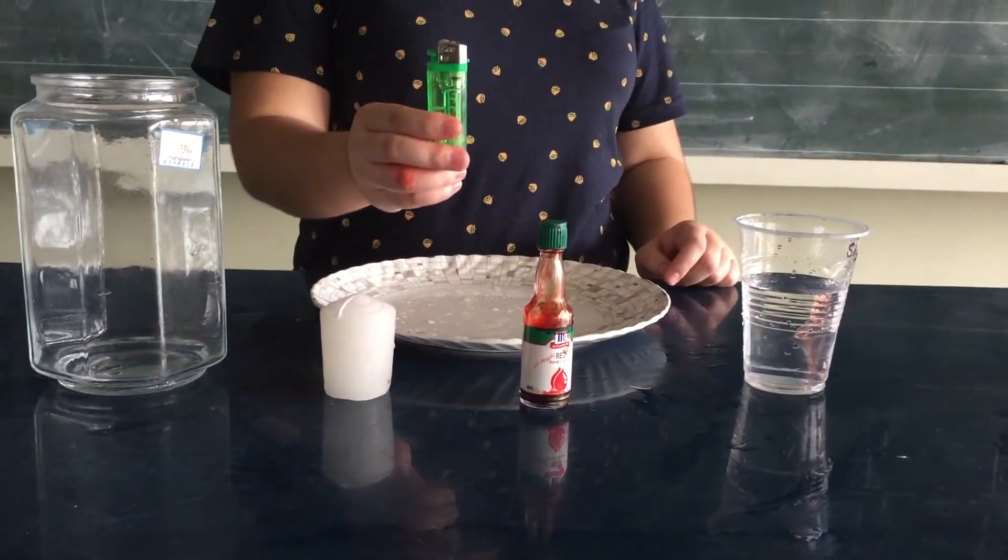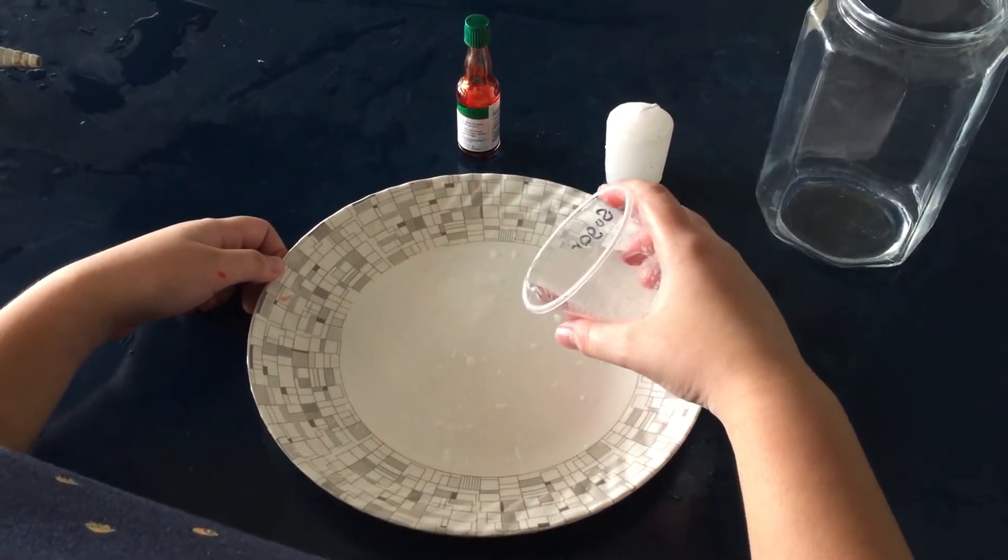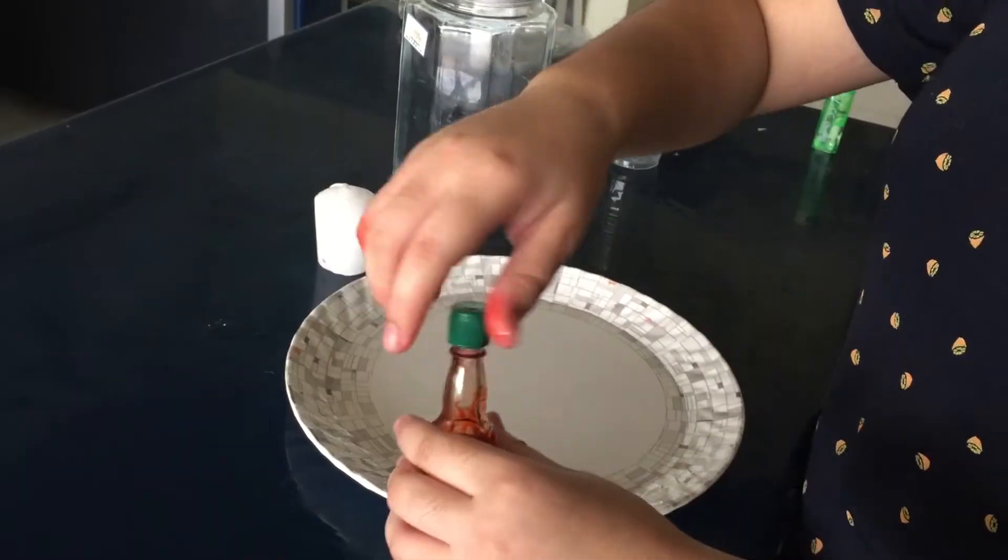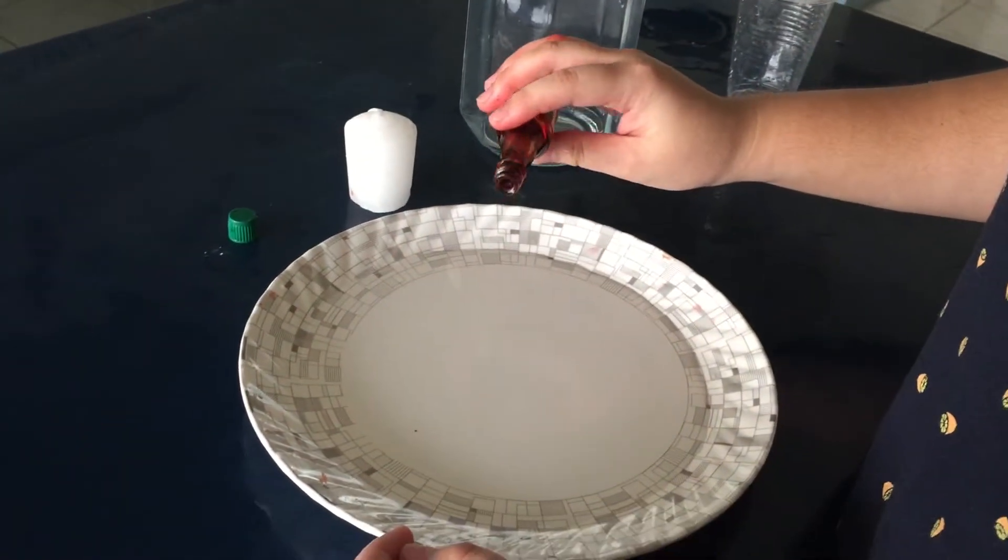First, fill the shallow dish with an inch or two of water. Then add a drop of food coloring to make it easier to see.